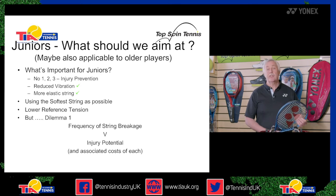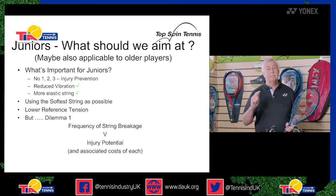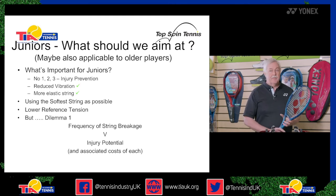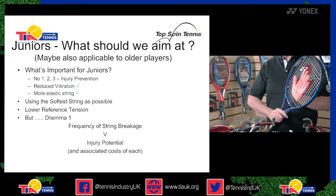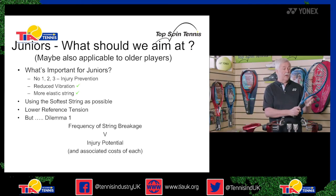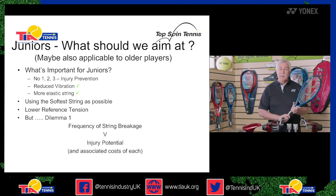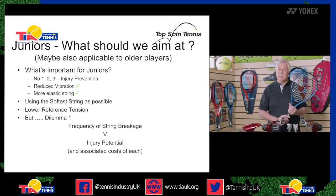Now let's talk about stringing for juniors — which may also apply to older players. The most important consideration? Injury prevention. Injury prevention. And injury prevention. We need to look at the softest string possible to give the most elastic string bed, reducing vibration so that when they're hitting the ball, vibration doesn't come down into their arm. Juniors are growing very fast — all their limbs and muscles are developing — so we need to look after them from a tennis string point of view. Unfortunately, we see many juniors coming in with polyester in a 26-inch racket, and all that does is give them an injury.